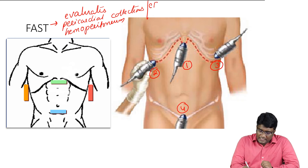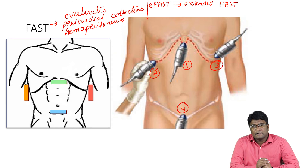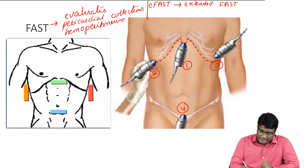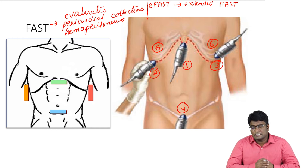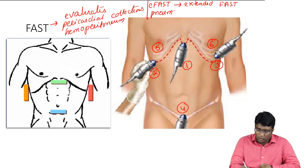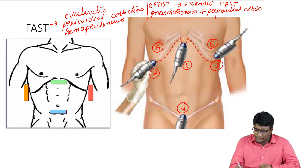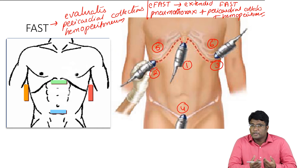There is also something called E-FAST, which stands for Extended FAST. In extended FAST, along with the four traditional views of FAST, we also take the right and left anterior pleural views, extending into the thoracic region. This allows us to also evaluate any presence of pneumothorax. So E-FAST evaluates pneumothorax along with pericardial collections and hemoperitoneum.